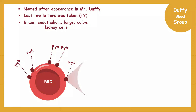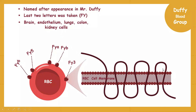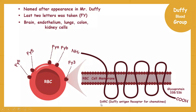Now I will discuss the biochemistry of Duffy blood group system antigens. The Duffy antigens are expressed on a glycoprotein that is 338 amino acids in length. The C-terminal of this glycoprotein is inside the red blood cell while the N-terminal is outside. We call this glycoprotein DARC — Duffy Antigen Receptor for Chemokine — and it has clinical significance, which I will discuss in a separate video.